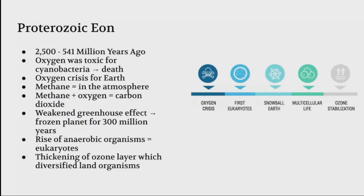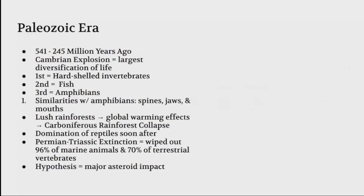The Paleozoic era was from 541 to 245 million years ago. There's the Cambrian explosion, the largest diversification of life on Earth. What came out of this was hard-shelled invertebrates, then fish, then amphibians. What humans have in relation with amphibians is that we have spines, jaws, and mouths.